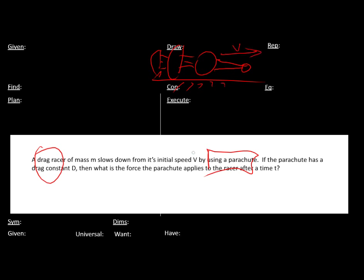He starts off with some initial speed v, he has a mass m, and the parachutes have a drag constant D. So I want to figure out what this is as a function of time. So let's see, what am I given?